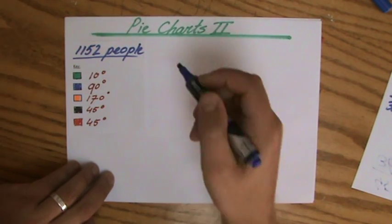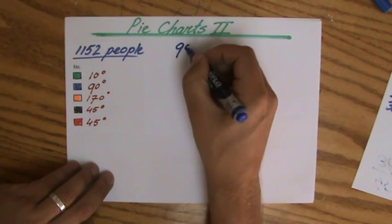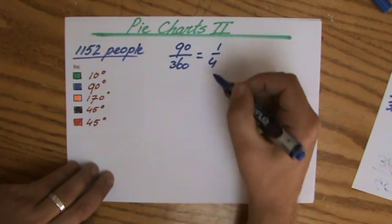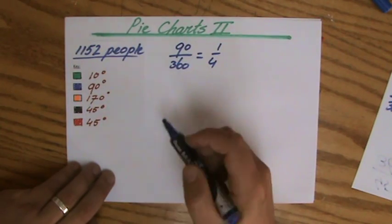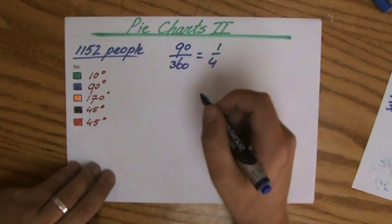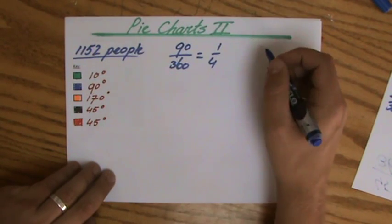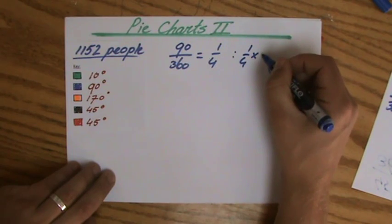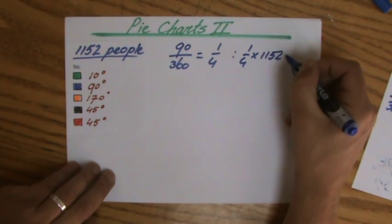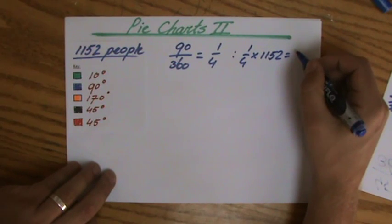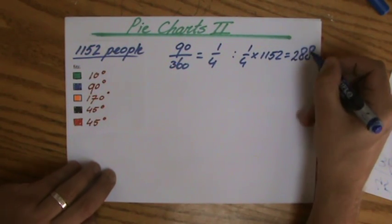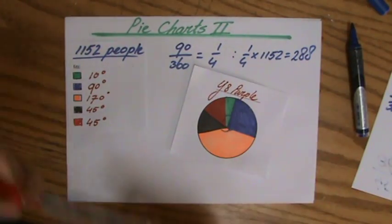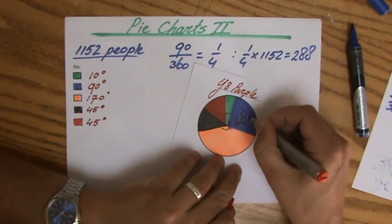As some of you already say, it's a quarter. 90 degrees out of 360 is indeed a quarter. So a quarter of the amount of people like blue. How do I find a quarter of the amount of people? Well, I can divide the amount of people by four, or I can say a quarter times 1152 people. And if you work it out on your calculator, that is 288 people. So 288 people like blue.